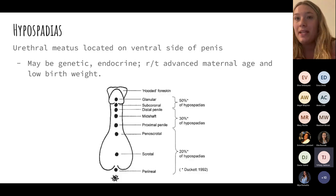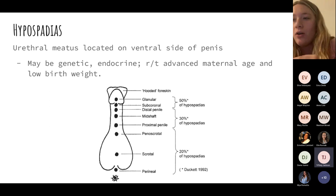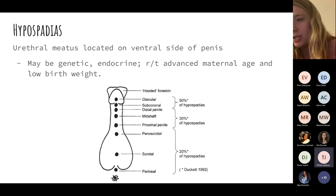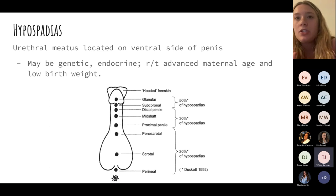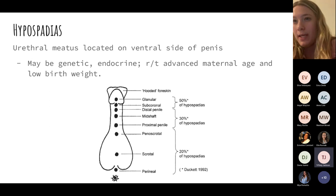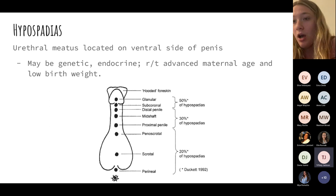For our pediatric population, most GU issues are structural. One common one is hypospadias — essentially the urethra in males is not where it should be. It can be in a number of different places, and this can make urination a little bit difficult.